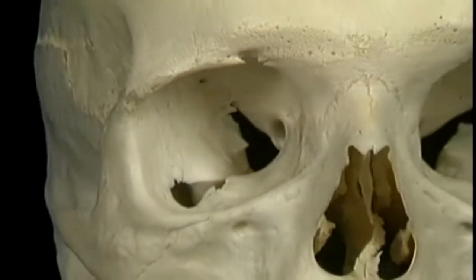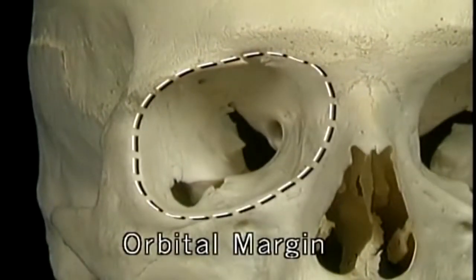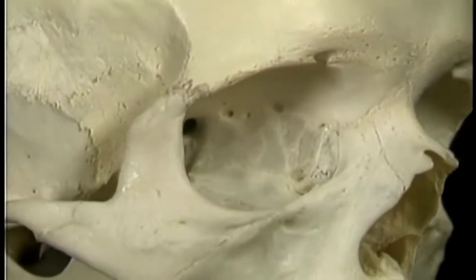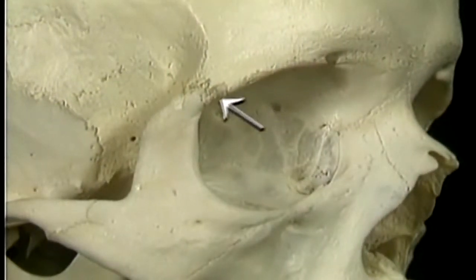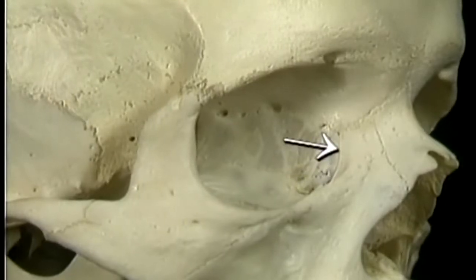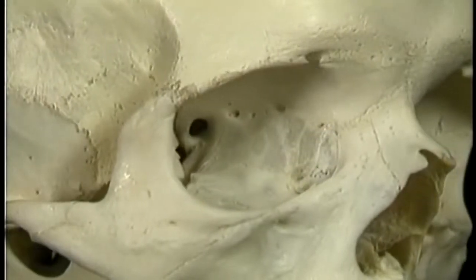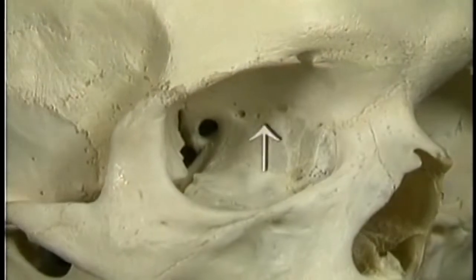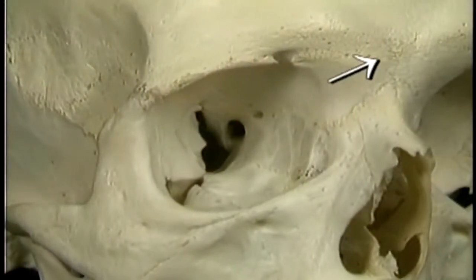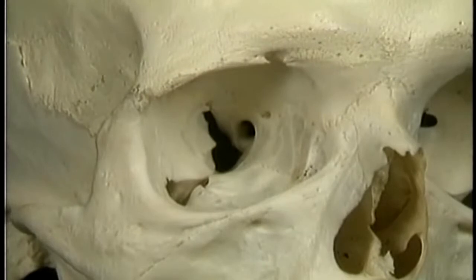The rim of the orbit is called the orbital margin. It's thick and clearly defined above, laterally, and below. Here medially the orbital margin is less distinct. The medial wall of the orbit blends with the contours of the nose and the central part of the forehead.